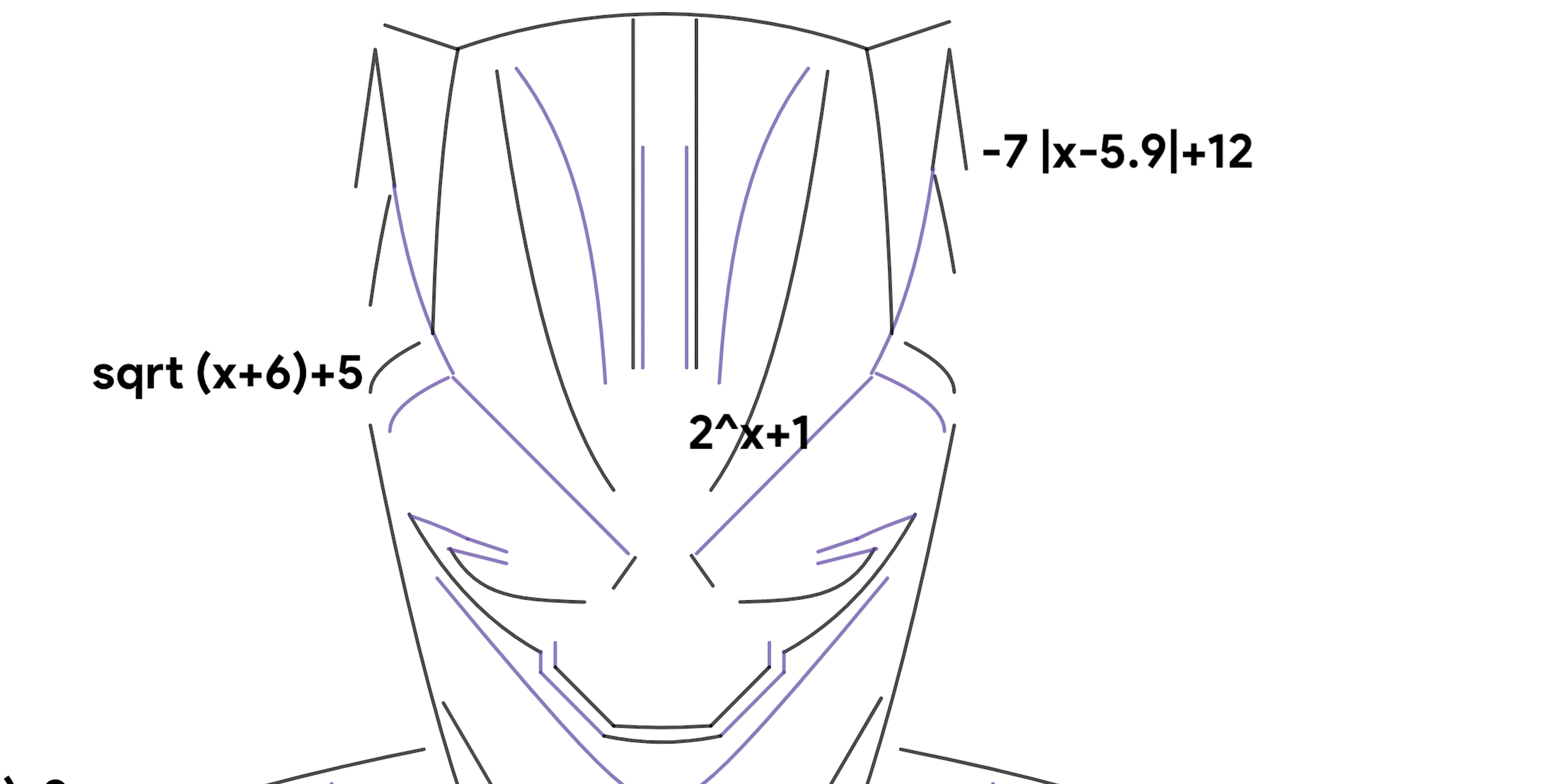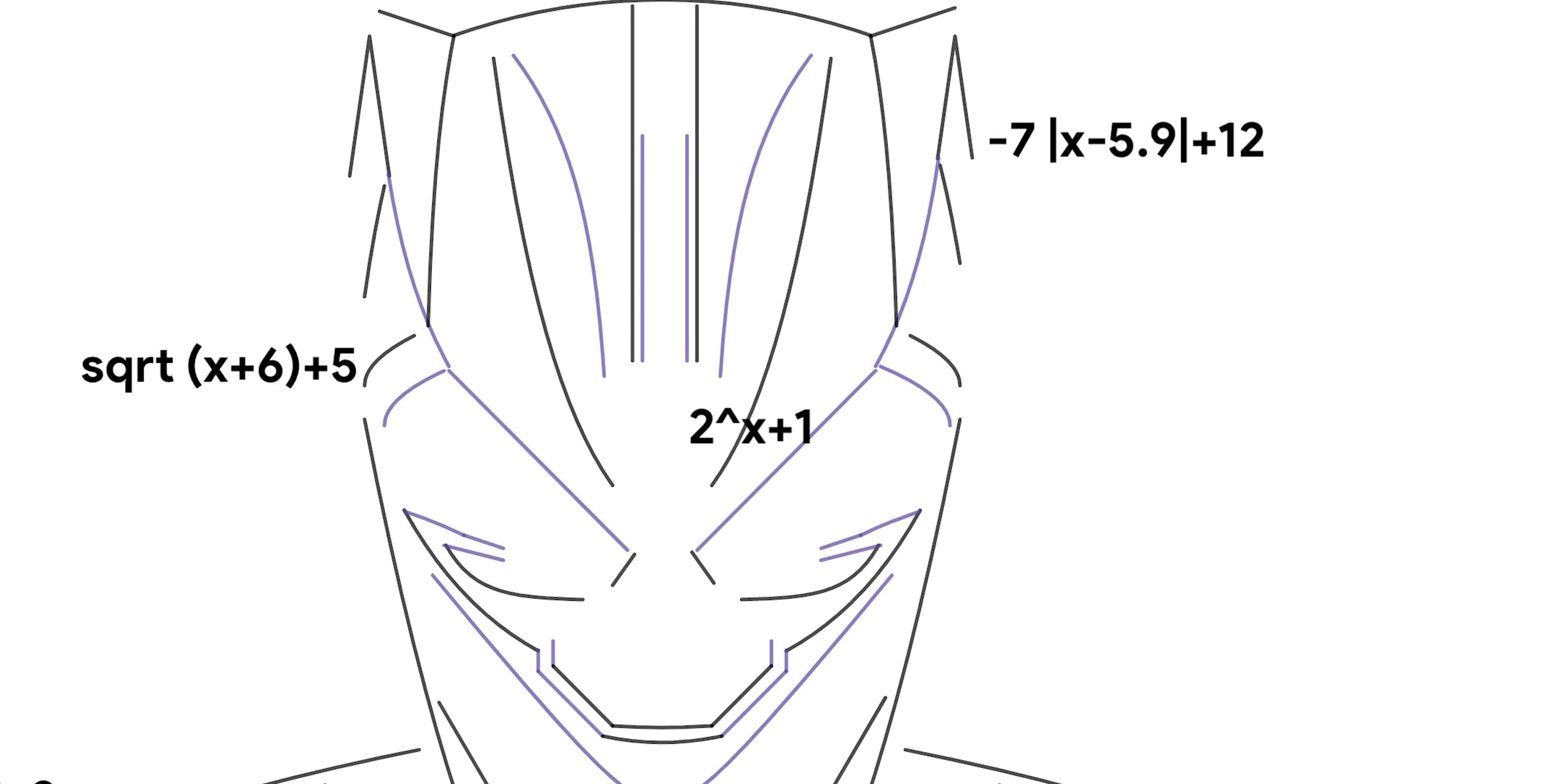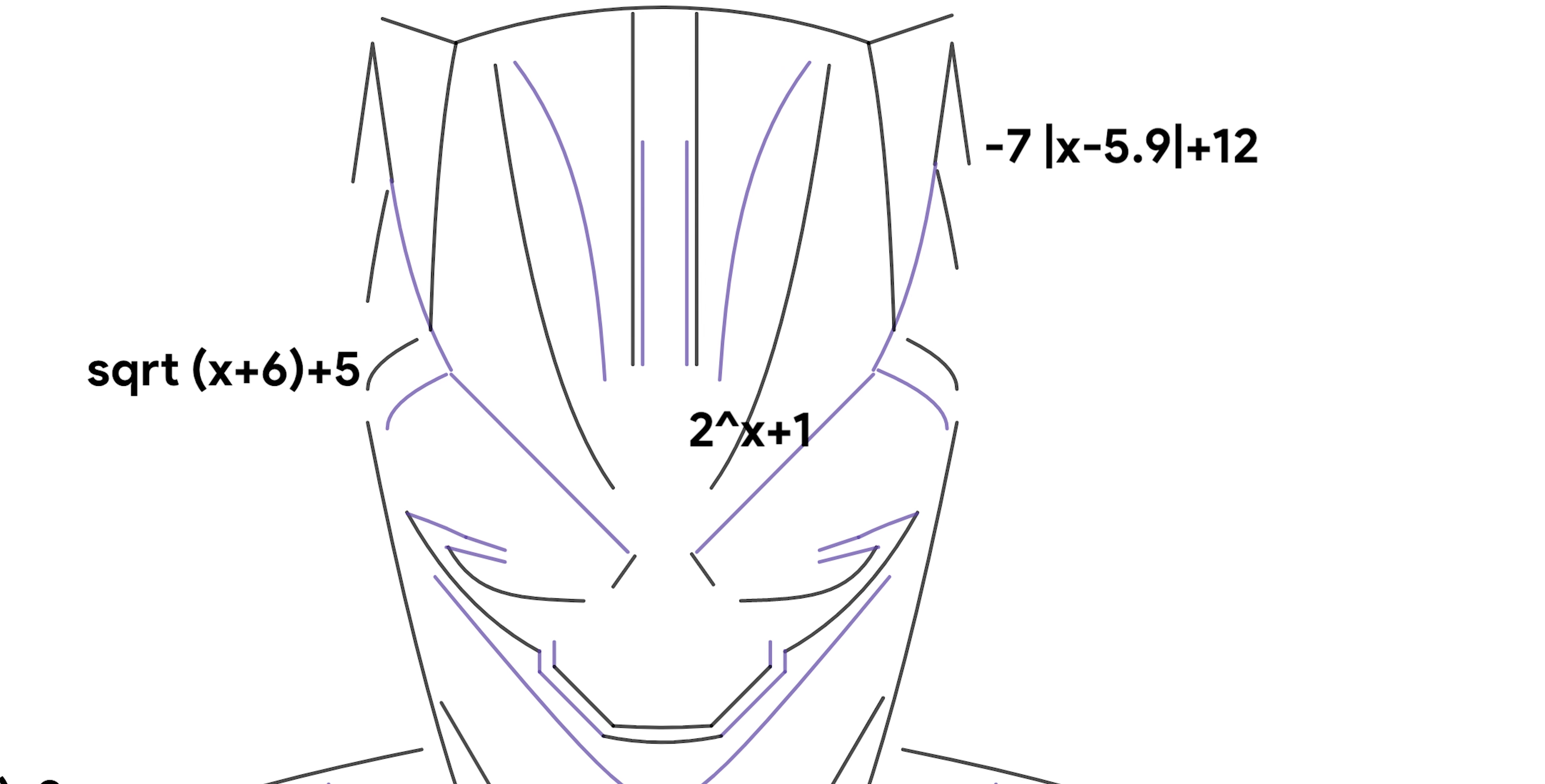In my function, I also vertically stretched by 7, went right 5.9, and went up 12. This function is part of the Black Panther suit's ear.